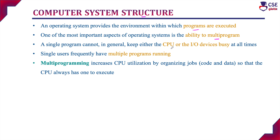In a single program environment, the CPU or IO devices will not be busy all the time because only one job is assigned. When the job is executing with the CPU, IO devices will be free. When the job is executing with IO devices, the CPU will be free. So either the CPU or IO devices will not be busy all the time. Multi-programming increases CPU utilization by organizing jobs so that there is always one job assigned to the CPU — it never sits idle.